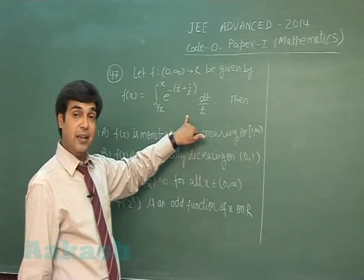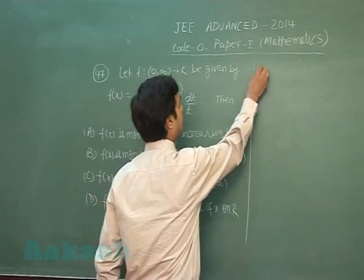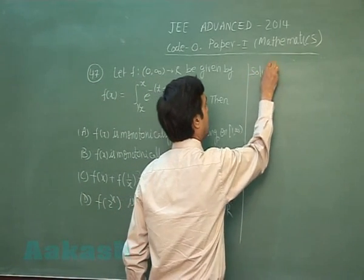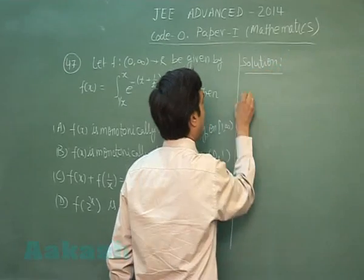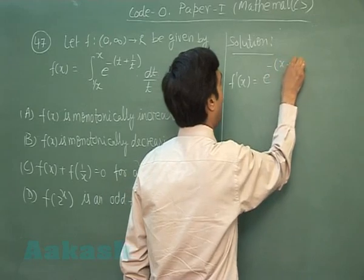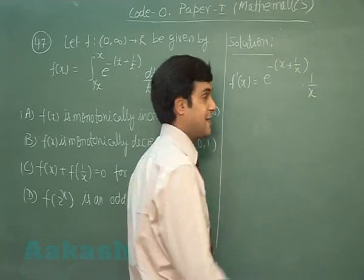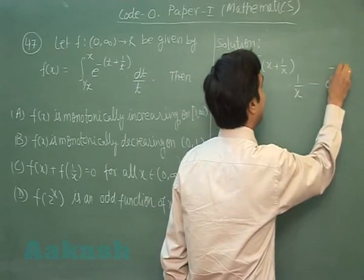Fine. So f(x) is given to me in form of integral. So let's differentiate the function: f'(x) = e^(-(x + 1/x)) · (1/x) - e^(-1/x - 1/x) · (1/x) · (-1/x²)